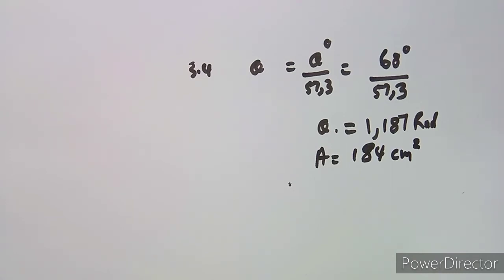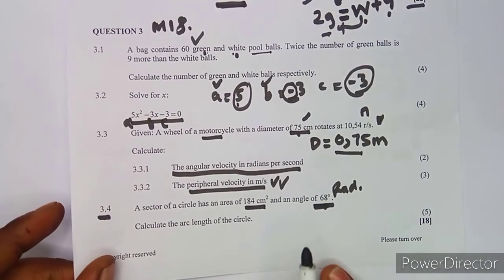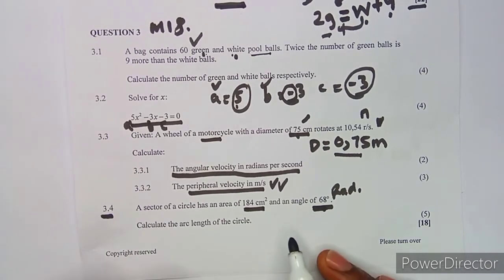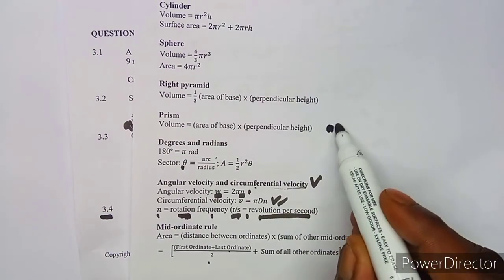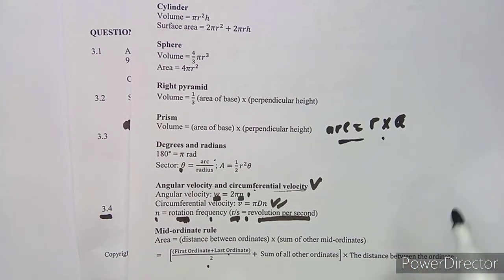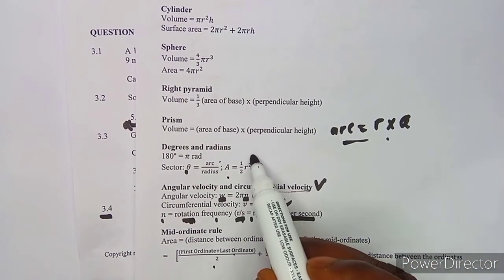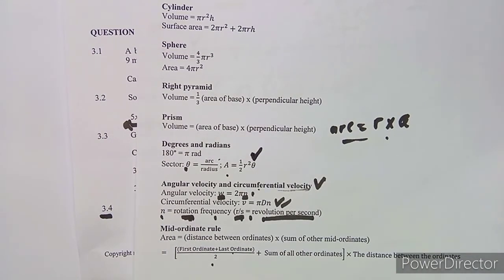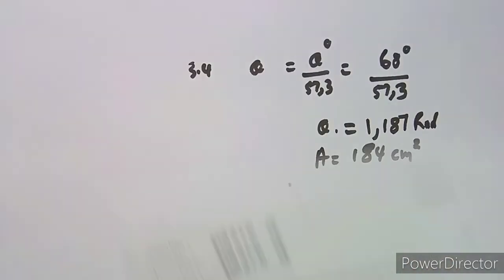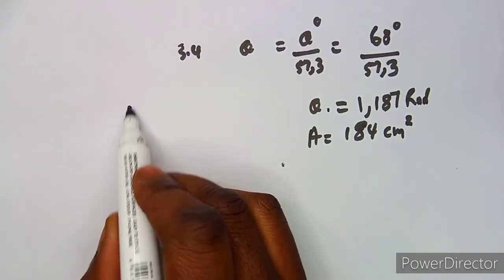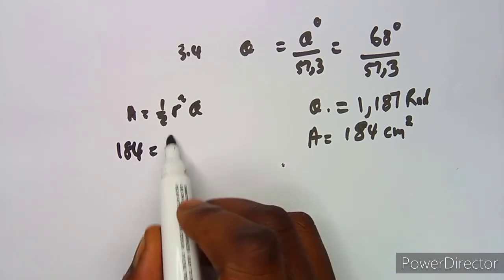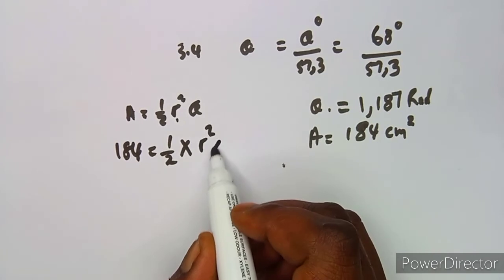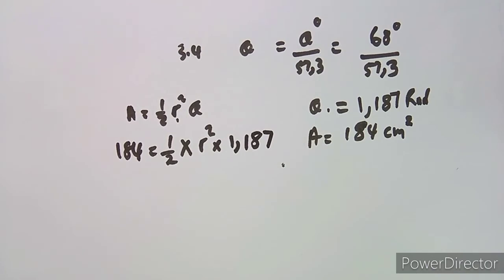To find the arc length (s = rθ), we first need the radius. We use the sector area formula: Area = ½r²θ. Substituting: 184 = ½ × r² × 1.187. Multiplying both sides by 2: 368 = r² × 1.187.